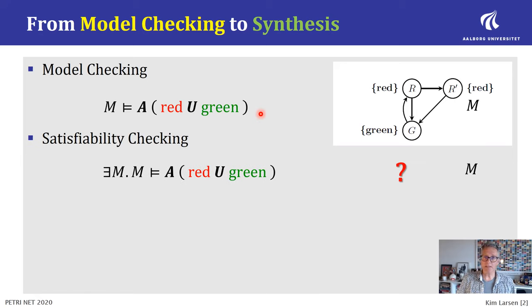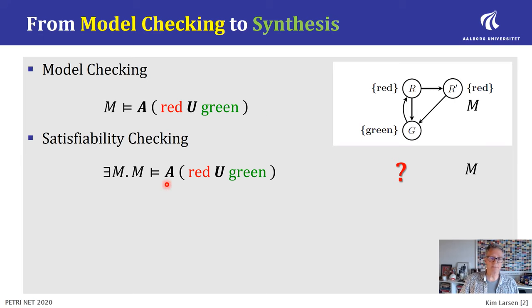As an intermediate step towards synthesis, we have the satisfiability checking problem. Here you are merely given the property of interest, and the question is whether there exists a model satisfying that property.